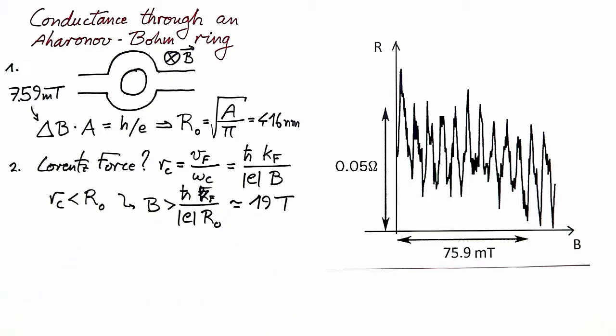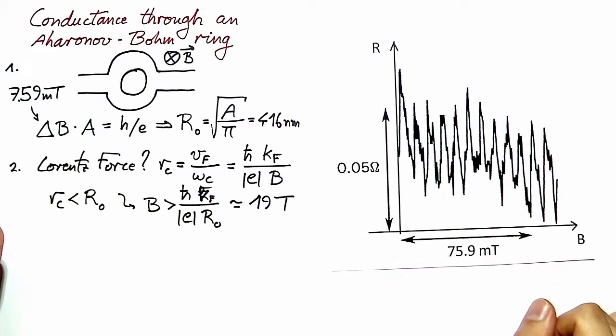It's a value which is very large compared to what you see in experiments involving semiconducting nanostructures. This difference is due to the relatively large Fermi wave vector in metallic systems, and ultimately it's due to different charge carrier densities. But in any case, in this experiment, Lorentz force plays no role.